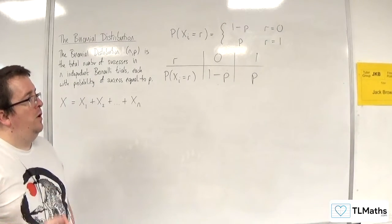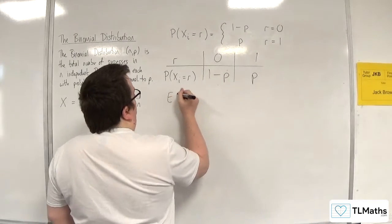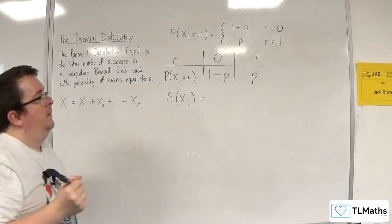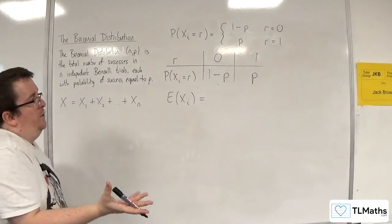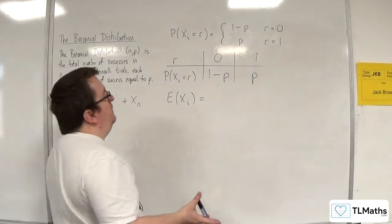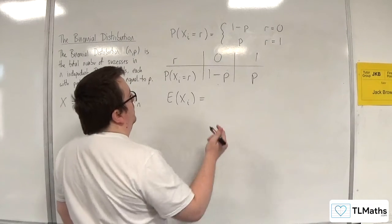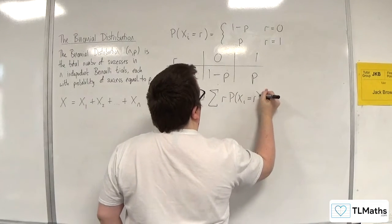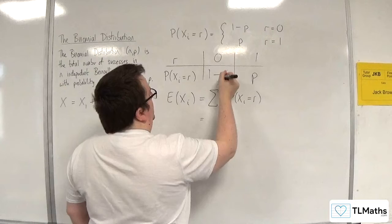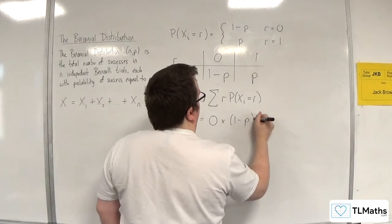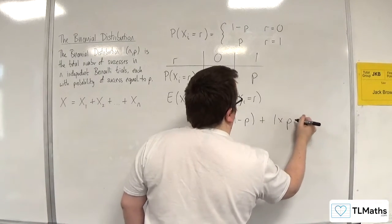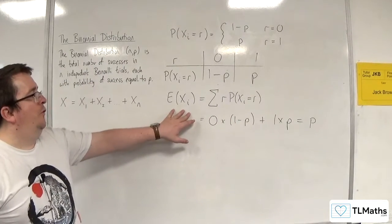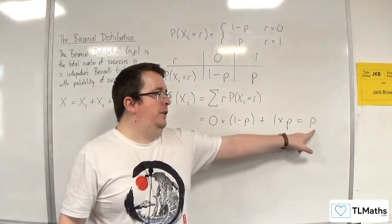So if I want to work out the expected value of X_i, well, I do that in the normal way that we do with discrete probability distributions. That is the sum of each of the R's times by their respective probabilities. So we're going to have 0 times 1 minus P plus 1 times P. And of course, that's just P. So the expected value of each of my Bernoulli distributions is P.